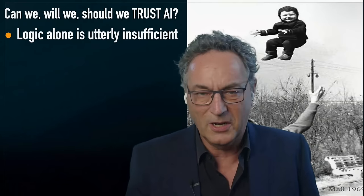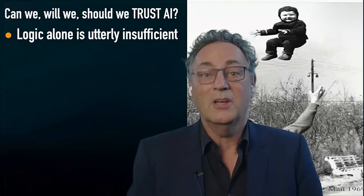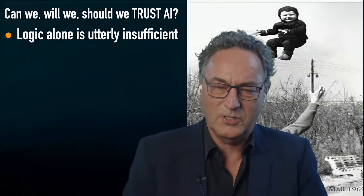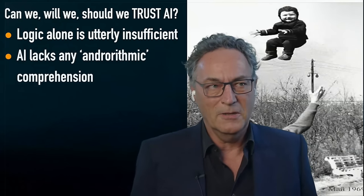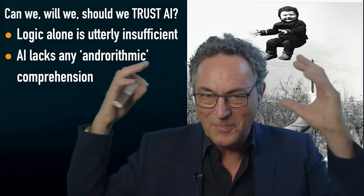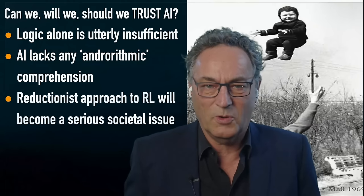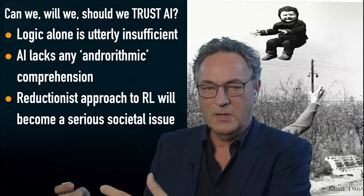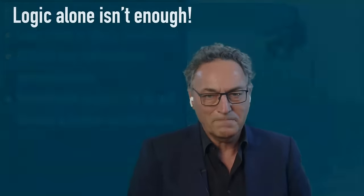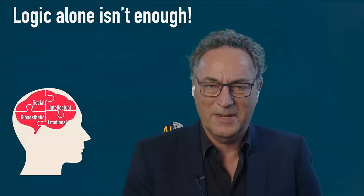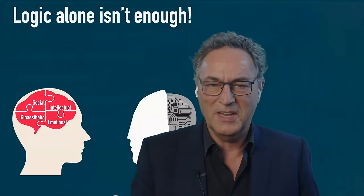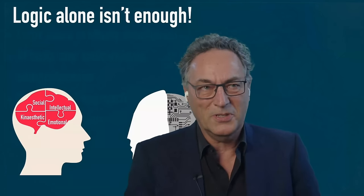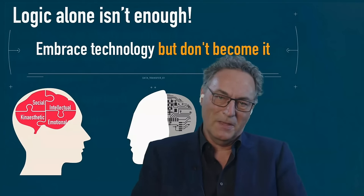Can we trust AI to do the right thing? Logic alone — we're not logical beings really, we use logic but we're very illogical and inefficient — emotions are our thing. Logic alone is utterly insufficient for life. ChatGPT is helpful but logic is logic and it can be faulty. It lacks any sort of androrithmic human comprehension — it doesn't know what it is or what it says. It has a very reductionist approach to real life. The AI sees three percent of real life, we see a hundred percent, and then the AI says this is your hundred percent. That's clearly not going to work.